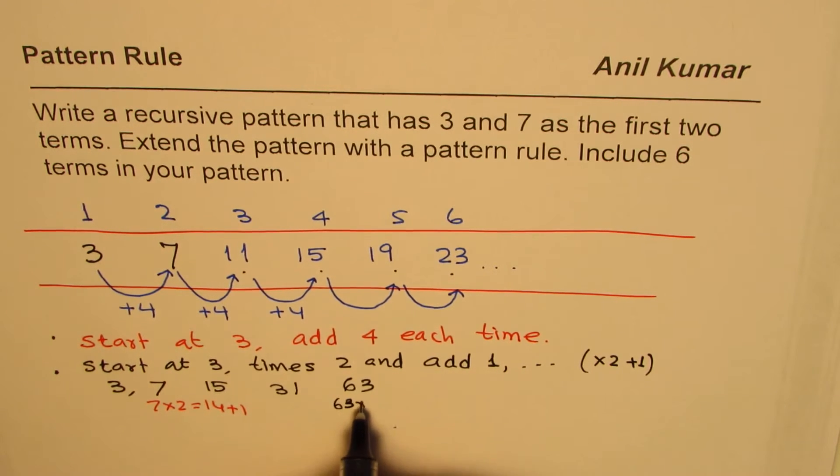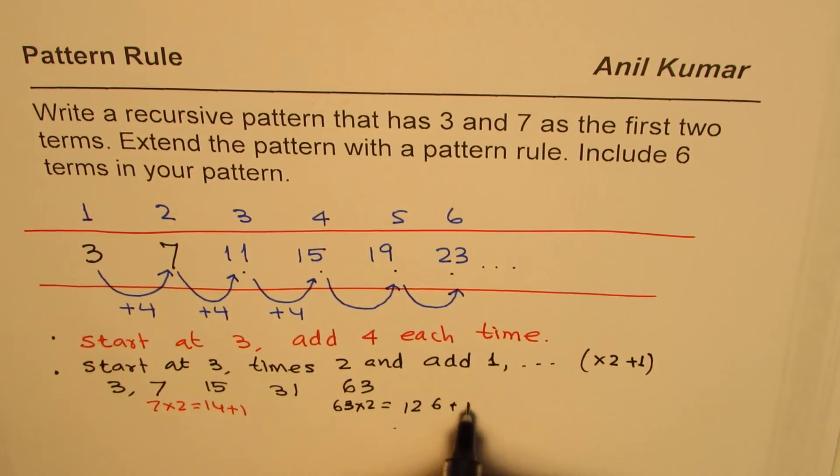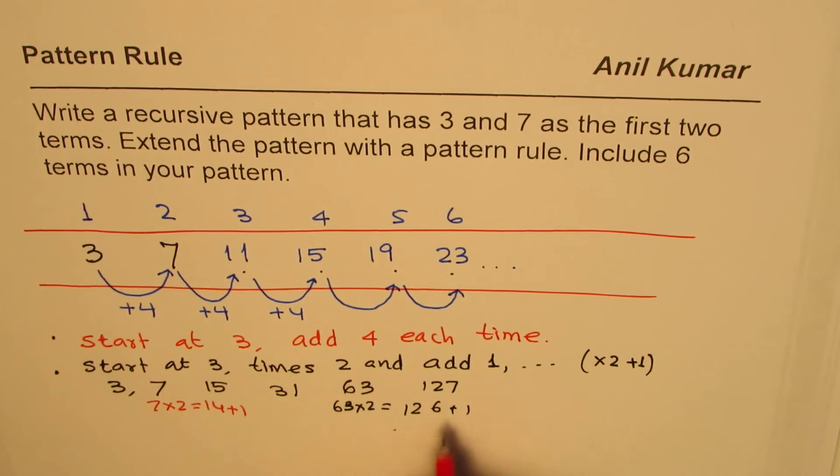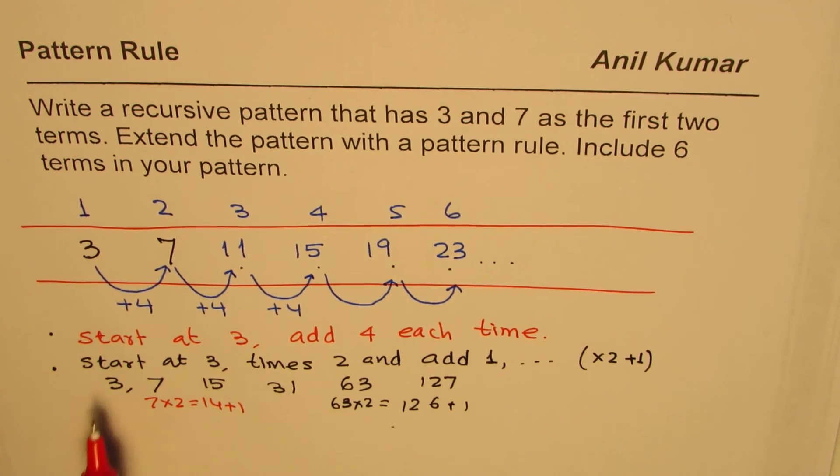Likewise you can do times two, so 63 times two will be 126 and add one, so you get 127. Correct, so likewise you can extend your pattern. At times you can have rules which are more complicated. We'll further look into such rules with the help of our input output machines.